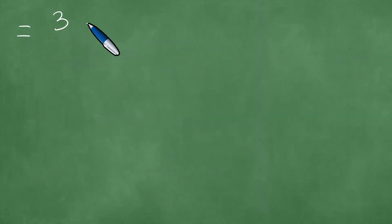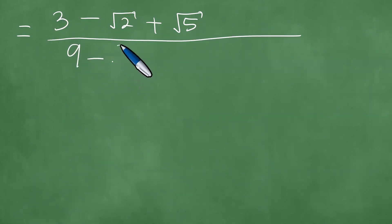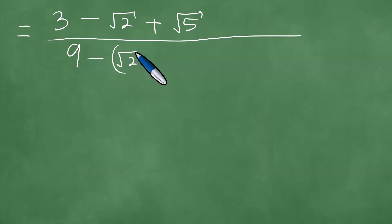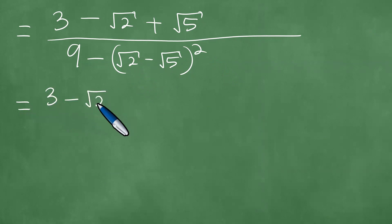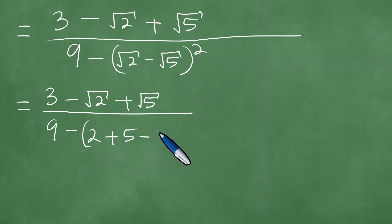This is awesome stuff. Therefore, in the numerator you have 3 minus the square root of 2 plus the square root of 5, and you divide everything by 9 minus the square root of 2 minus the square root of 5, all squared. This means you have 3 minus the square root of 2 plus the square root of 5, and the fact that you have 3 minus the square root of 5.